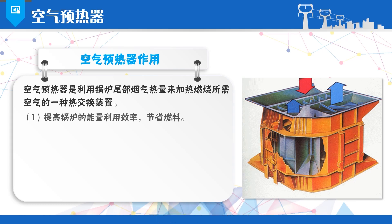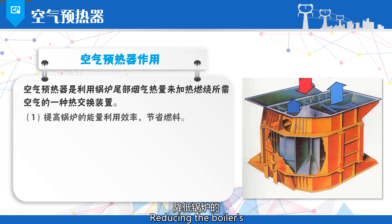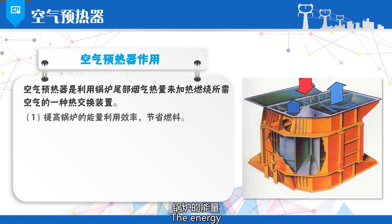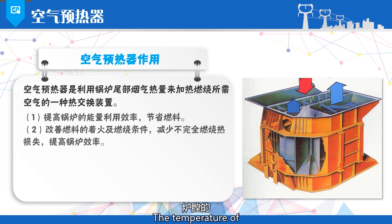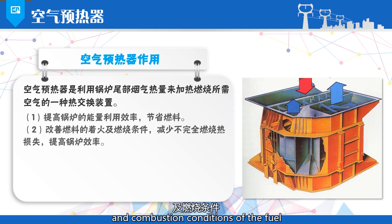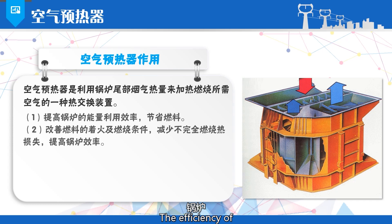Its main functions include: one, utilizing air to absorb the heat from the flue gas at the rear end of the boiler, reducing the exhaust gas temperature, reducing the heat loss from the exhaust gas, improving the energy utilization efficiency of the boiler, and saving fuel. Two, air after being preheated enters the furnace, which can increase the temperature of the furnace, improve the ignition and combustion conditions of the fuel, reduce the heat loss from incomplete combustion, and enhance the efficiency of the boiler.